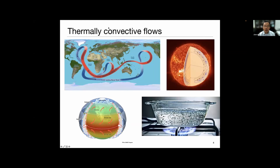Thermally convective flows occur in many natural phenomena, such as ocean convection, near the surface of the earth, the sun, and atmospheric convection. Even when you boil water, you generate convective flows.